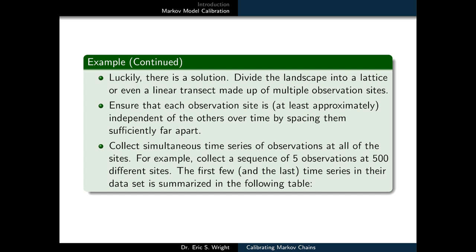We'd then collect simultaneous time series of observations at all of the sites. For example, we'd collect a sequence of just five observations, but maybe at 500 different sites. The first few in the last time series in their data set of this character is summarized in the following table.